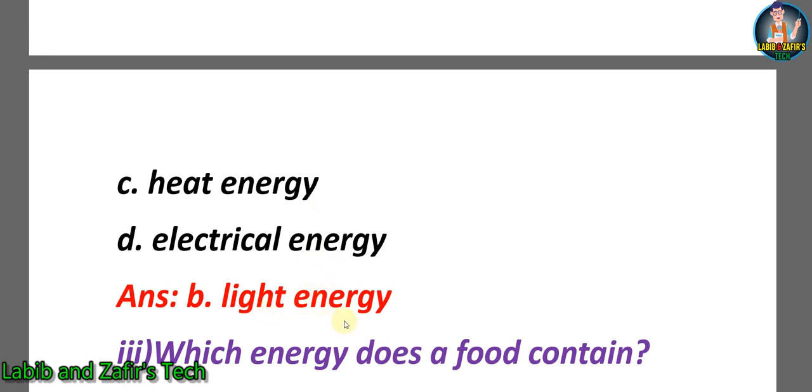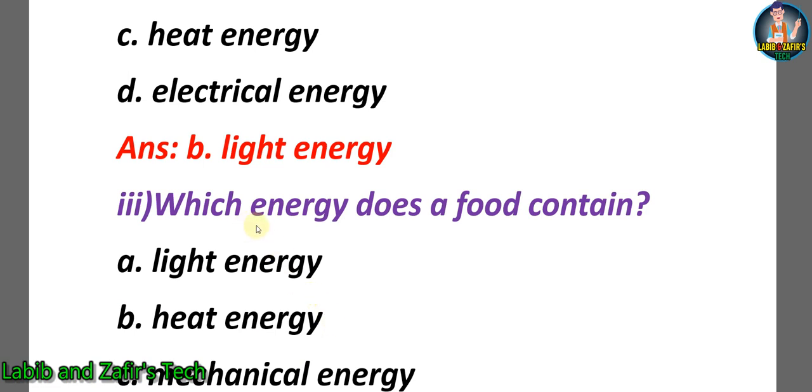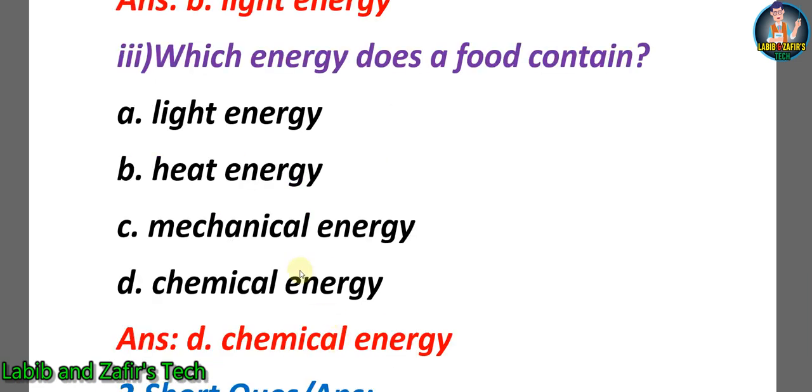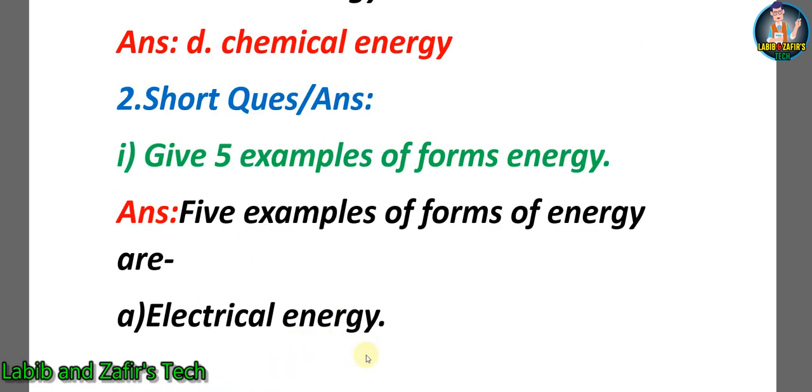Third question: which energy does a food contain? A) light energy, B) heat energy, C) mechanical energy, and the last one is chemical energy. So the answer will be the last one, which is D: chemical energy.